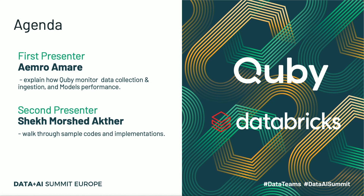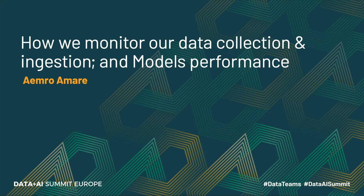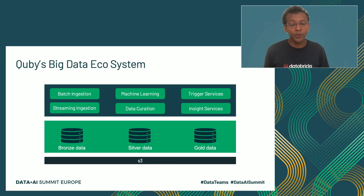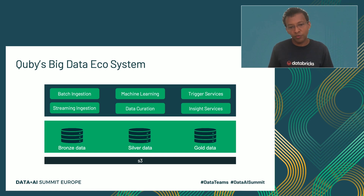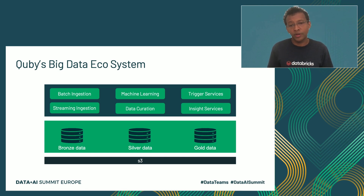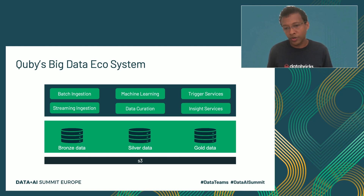Sheikh is going to walk you through sample codes and implementations of how we monitor our data collection and ingestion. Before explaining the details of how we do the monitoring system, it's very important to explain how our big data ecosystem looks like. We are running Delta Lake and we have different stages of data processing. We start from bronze, then move to silver, and then goes to the gold layer. In the bronze layer, we do batch ingestion and stream ingestion. On the silver layer, we do data curation, for example interpolation for time series data. On top of it, we run machine learning algorithms and the scoring results are stored in the gold layer.